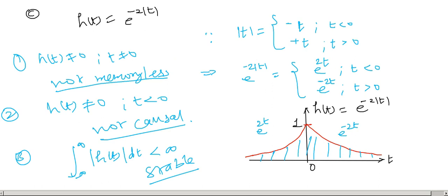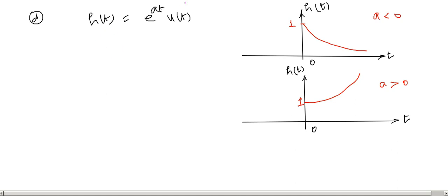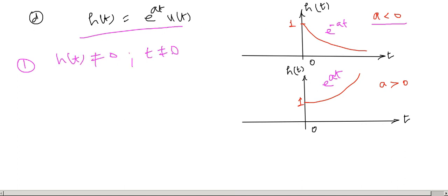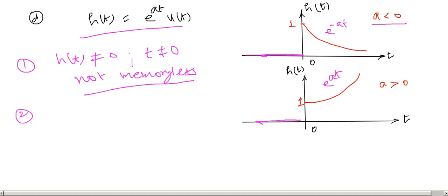The fourth problem: H(t) = e^(at)·u(t). There are two cases — if a is negative, we get a decaying exponential for t ≥ 0; if a is positive, we get a growing exponential. Since H(t) ≠ 0 for t ≠ 0, the system is not memoryless. Since H(t) = 0 for t less than 0, this is a causal system.